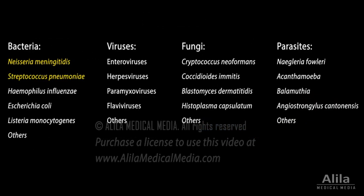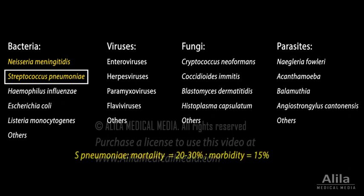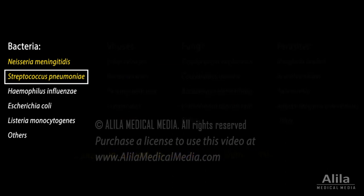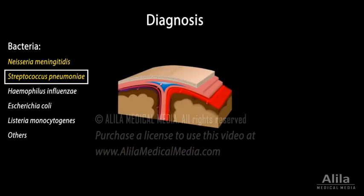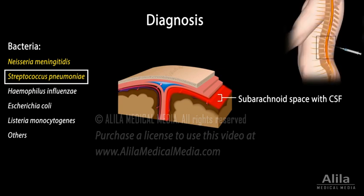Bacterial meningitis is most serious, with Streptococcus pneumoniae causing the highest mortality and morbidity. It's a medical emergency requiring immediate diagnosis and treatment. A hallmark of bacterial meningitis is the presence of white blood cells and bacteria in the cerebrospinal fluid, the CSF. Samples of the CSF can be obtained by making a lumbar puncture in a spinal tap procedure.